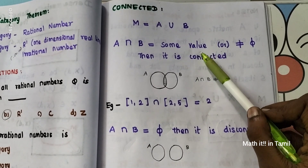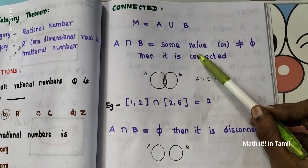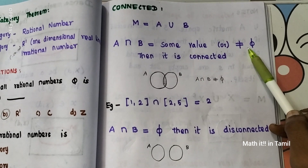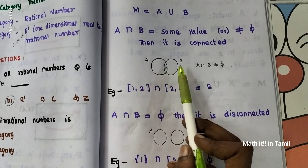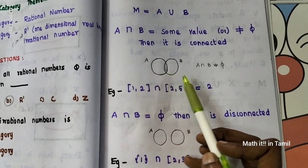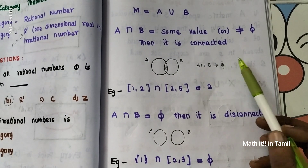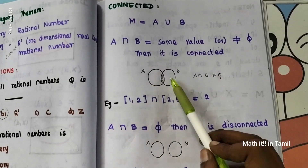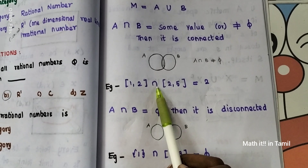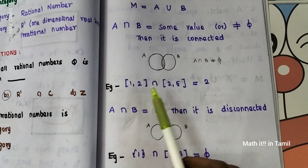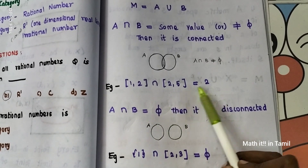So, it is connected. A and B are connected if there is a common point — if we take A intersection B and some common point. That's why the intersection value is not equal to empty. That's why it is connected. For example, [1,2] intersection [2,5] gives common point 2. At least one point is common, so this is connected.